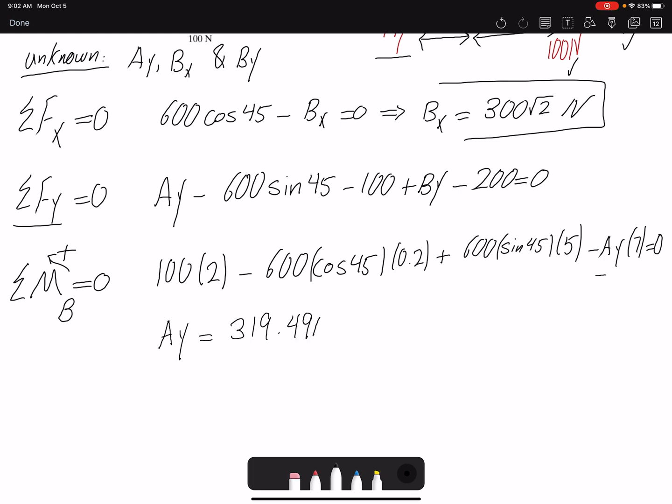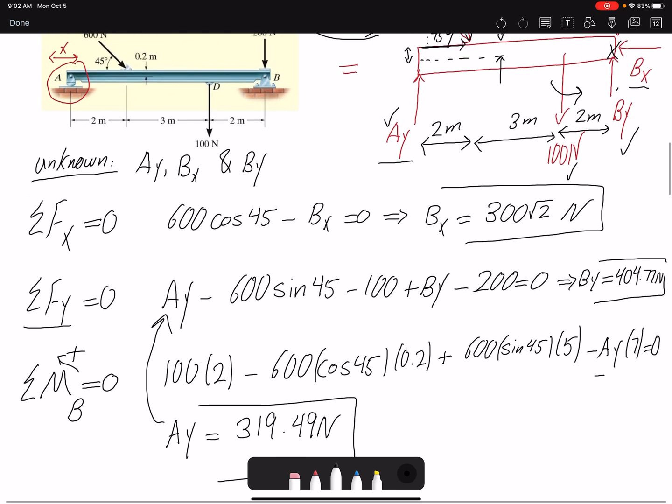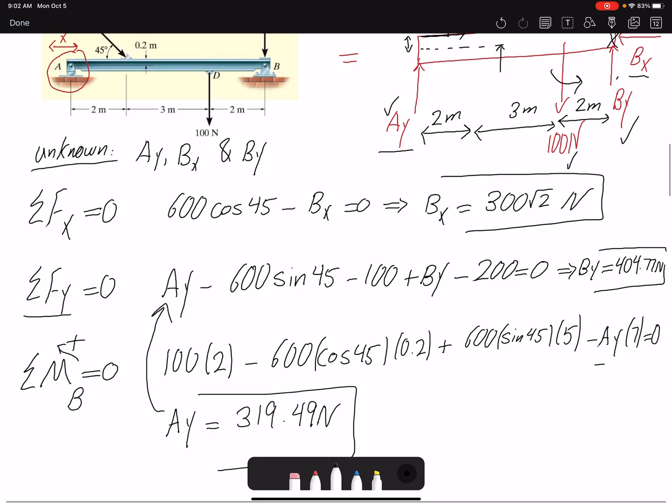Now that I have Ay, I can go to my second equation and find By. So three equations, three unknowns - we solved all the unknowns. You can see all the values are positive, which means the directions we assumed are correct.